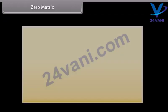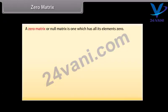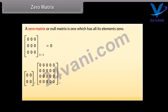Zero matrix: a zero matrix or null matrix is one which has all its elements zero. Here is a 3 by 3 zero matrix. These are three more examples of zero matrix. The zero matrix is denoted by zero.